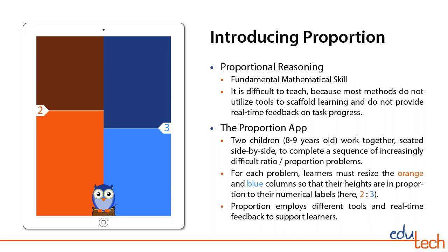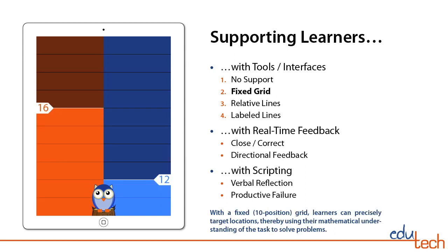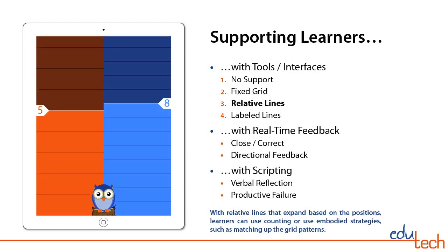Proportion employs different tools and real-time feedback to support learners. Without support, learners must estimate the ratios. With a fixed grid, learners can precisely target locations, thereby using their mathematical understanding of the task to solve problems. With relative lines that expand based on the positions, learners can use counting or embodied strategies such as matching up the grid patterns.